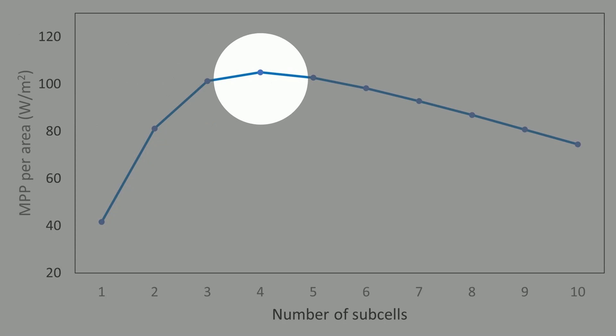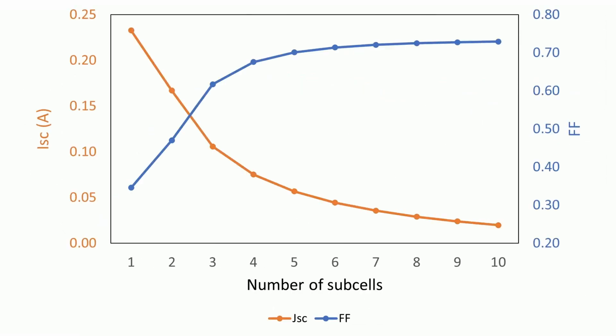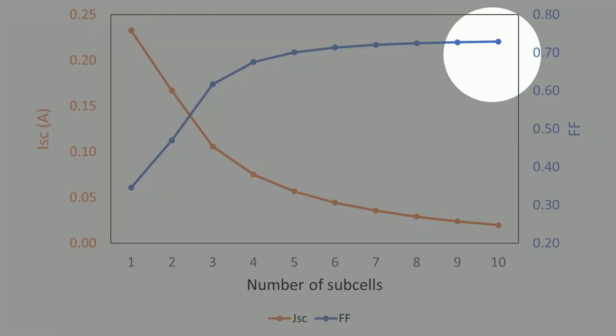With more sub-cells, the voltage increases linearly, but the current sharply decreases with the total active area. The fill factor trend mirrors the current and is highest with 10 sub-cells, because of the reduced total resistance.